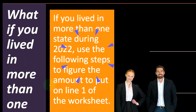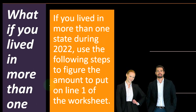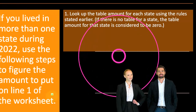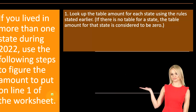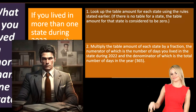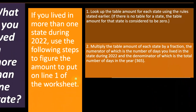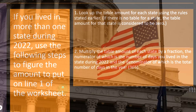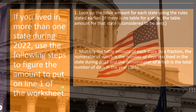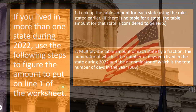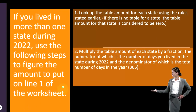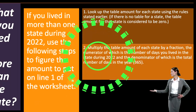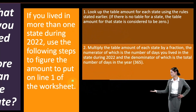If you lived in more than one state during 2022, use the following steps to figure the amount to enter on line one of the worksheet. First, look up the table amount for each state using the rules stated earlier. If there's no table for a state, the table amount is considered to be zero. When dealing with the sales tax option, some states use an income tax system and some use a sales tax — if dealing with sales tax, you can use actual sales tax paid, but oftentimes you may use a table rather than adding up all your sales tax receipts. In multiple states, the question of which table to use arises.